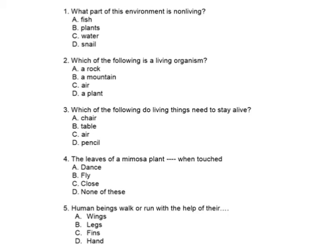Coming to the second question: which of the following is a living organism? From the options — rock, mountain, air, plant — the answer is Plant. Plant is a living organism, whereas rock, mountain, and air are natural non-living things.